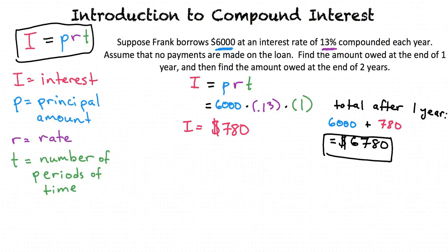What I'm understanding here is that I substitute $6,780 for P, I still use 0.13 for R, and then I substitute in 1 again for T, right?